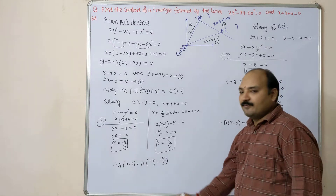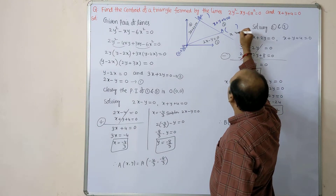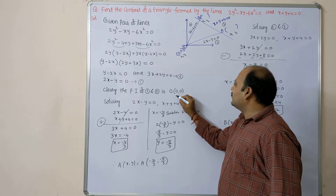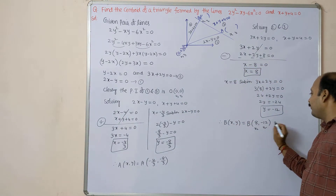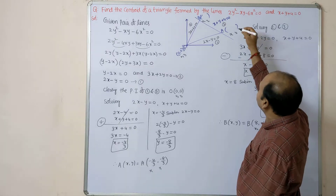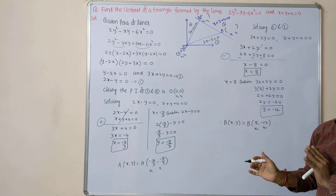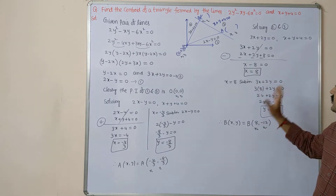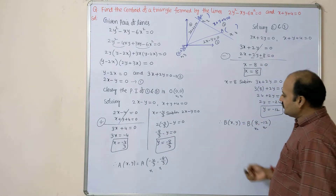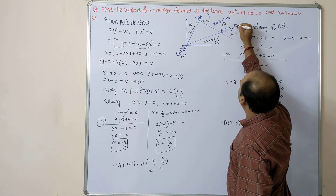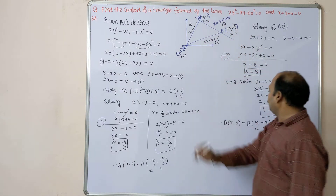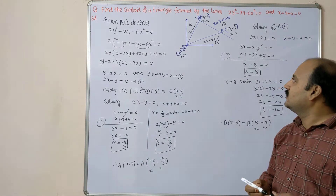So point A is (x₁, y₁) = (-4/3, -8/3), point B is (x₂, y₂) = (8, -12), and the origin is (x₃, y₃) = (0, 0). For 7 marks: this procedure gives 3 marks, calculating the centroid gives 2 marks, and calculating the area of the triangle gives 2 marks.